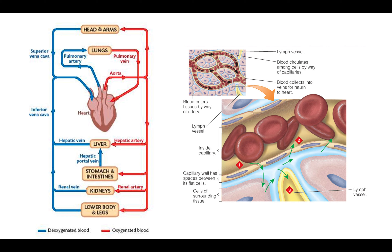Now we can look at the flow of blood in the body. Starting with deoxygenated blood entering the heart, it's pushed out and travels to the lungs where it picks up oxygen. Now oxygenated, it returns to the heart, which pumps it out through the aorta to the rest of the body. One area of emphasis when it comes to nutrition is blood flowing to the stomach and intestines. The small intestine is where the majority of nutrient absorption occurs, and nutrients absorbed there go directly to the liver.